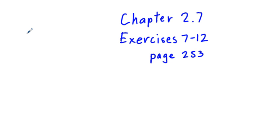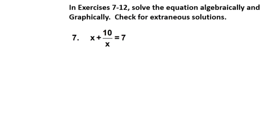Chapter 2.7, Exercises 7 through 12. This section of the book, Section 2.7, has to do with solving rational equations. In the prior video, we worked out problems 1, 3, and 5, the odd-numbered problems. In this set, we're going to tackle problems 7 through 12, specifically the odd-numbered problems 7, 9, and 11.